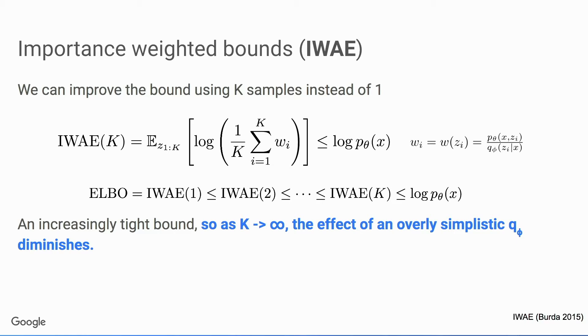In 2015, Yuri Burda introduced the idea of drawing multiple samples and combining them to construct a tighter lower bound — this is IWAE. The great thing is that by drawing more and more samples, we can construct a sequence of tighter lower bounds which in the limit converge to the marginal log likelihood. And as the number of samples goes to infinity, the effect of an overly simplistic Q diminishes.